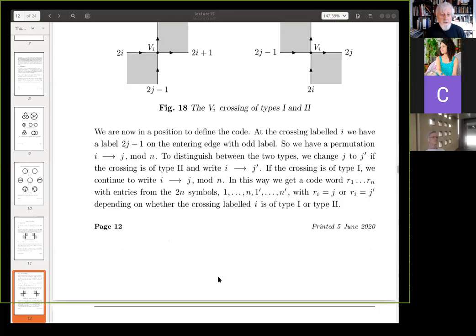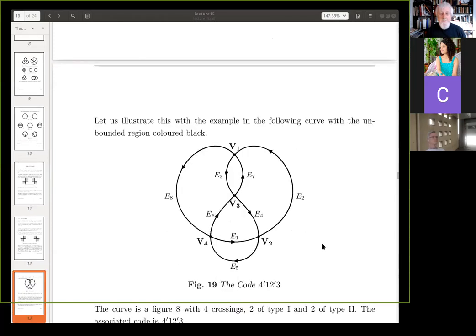And I'll give you an example. Take this following curve. And the code is four dash one, two dash three. If you look at the, so we go to V one, say, and the, yeah, the curve coming in is E two. That's why it's labeled V one. And the curve coming in is E seven. And seven is eight minus one, which is four. So that's four. And it is the second type of crossing here. So we've got four dashed. Okay. And then similarly, we get one, two dash and three. Okay. And that's a code. If you've got that code, you can then draw this.